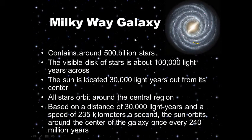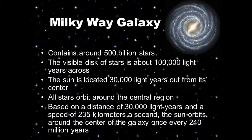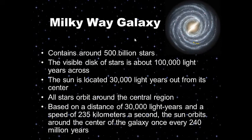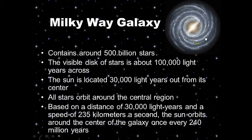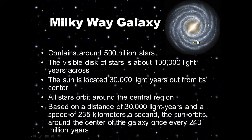Based on a distance of 30,000 light-years and a speed of 235 kilometers per second, the Sun orbits around the center of our Milky Way galaxy once every 240 million years.